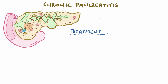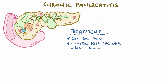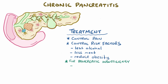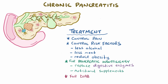Treatment of chronic pancreatitis involves controlling pain and trying to control risk factors—things like drinking less alcohol, eating less meat, and reducing obesity. Individuals with pancreatic insufficiency might require replacement digestive enzymes and nutritional supplements. And those with diabetes might need insulin replacement therapy.